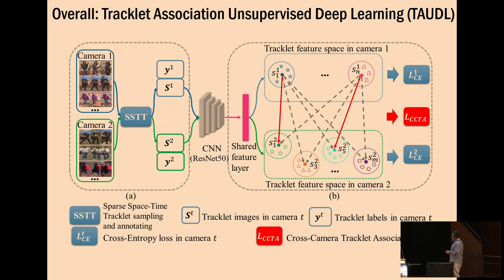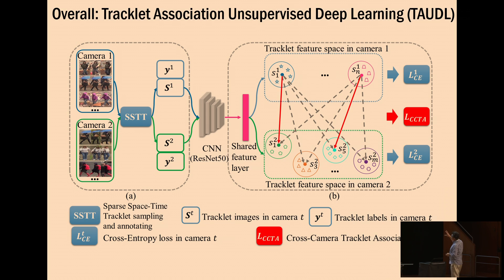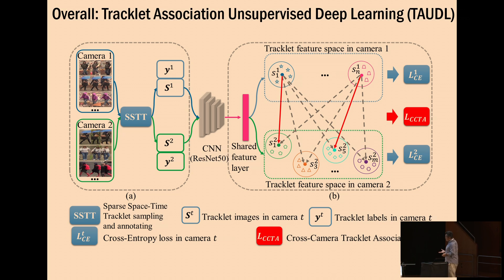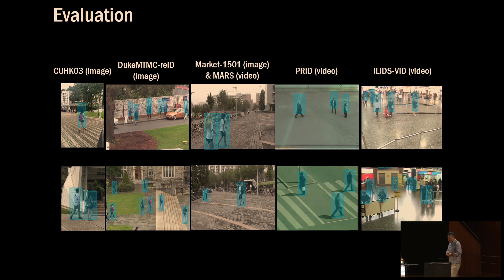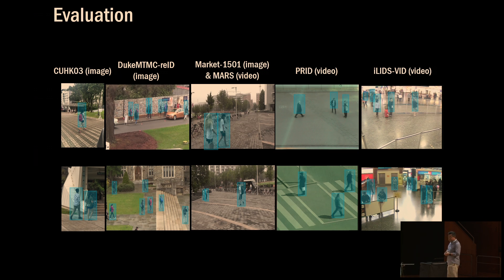The overall model starts with initial tracklet sampling, then trains a ResNet-50 with two types of loss functions: within-camera local discrimination and between-camera global association discovery. All of this is performed on all cameras within a given environment, evaluated against three of the largest image-based Re-ID datasets and three video-based Re-ID datasets.